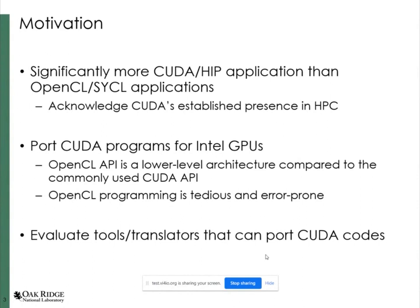The OpenCL API is a lower-level architecture compared to the commonly used CUDA API, so it requires more time and effort to develop an OpenCL host program, and it is often tedious and error-prone. Acknowledging CUDA's established presence in high-performance computing, and to alleviate the pain of manual development of OpenCL programs, we evaluate the performance of applications ported from CUDA using HIP-CL and the Intel DPC++ compatibility tool on Intel computing platforms.